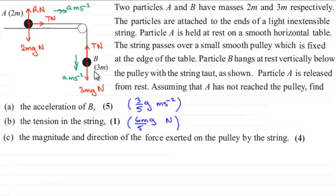Remember we were given these two particles A and B of masses 2M and 3M and they were connected by this light inextensible string passing over this smooth pulley. And we had to find the acceleration of B which we found out to be 3 fifths G meters per second per second.